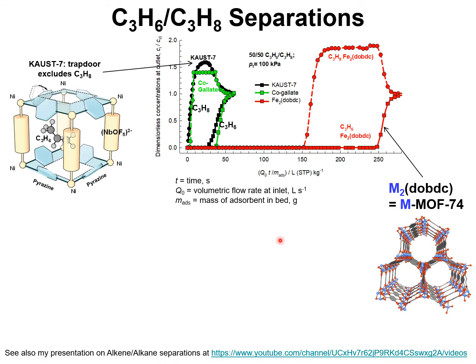A variety of MOFs are available for separation of propane-propylene mixtures. The breakthrough curves for three different MOFs are shown here. The red symbols are the breakthrough curves obtained with iron MOF-74, in which propylene is selectively absorbed by the unsaturated exposed iron atoms at the vertices of the hexagonal frameworks of MOF-74.